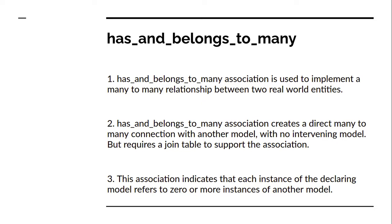In our course project we will implement this many-to-many relationship using has_and_belongs_to_many association between Student and Course model. In the real world, a student can be enrolled in multiple courses at a time, and a course can also be taken by multiple students. For example, on Udemy you can purchase as many courses as you want, and that same course can be purchased by multiple students as well. This is the perfect example of a many-to-many relationship between courses and students.